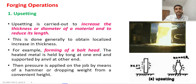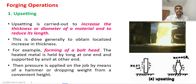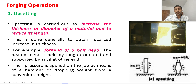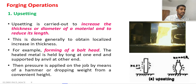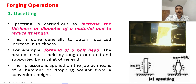The first operation is the upsetting process. In the upsetting process, the thickness or diameter of the material is increased and its length is reduced. During forging operations there is no change in volume, so any change in dimension will increase the other dimensions. Any reduction in length is compensated with the increase in thickness or diameter. This is commonly performed using open die forging on ingot, billet, bar, or preform.